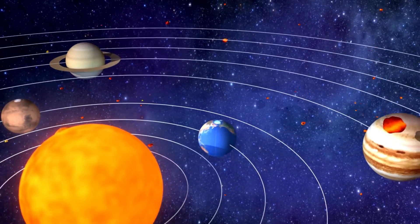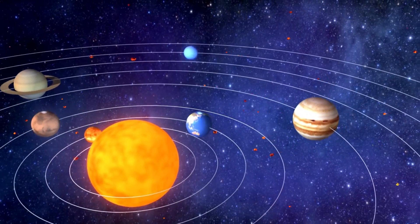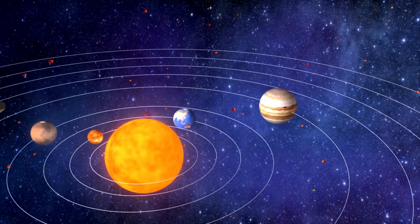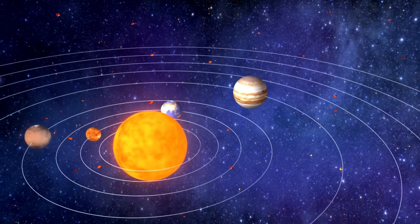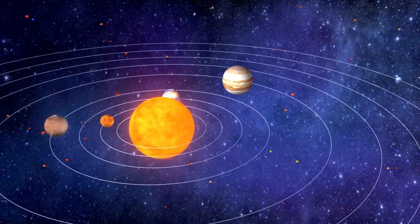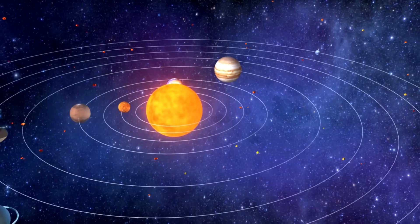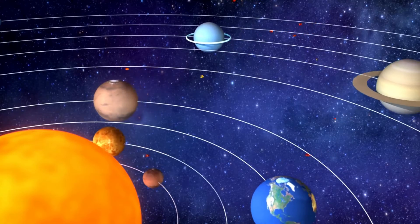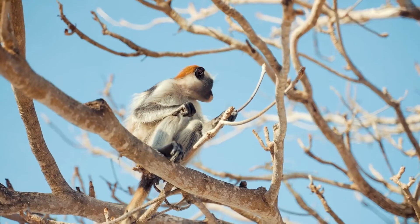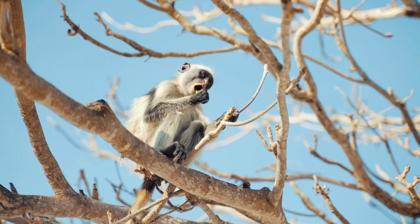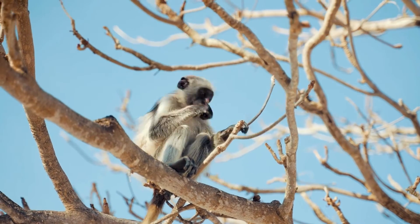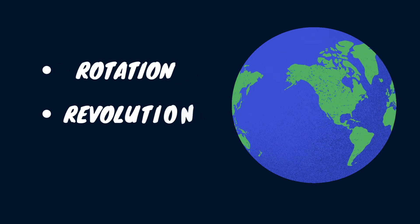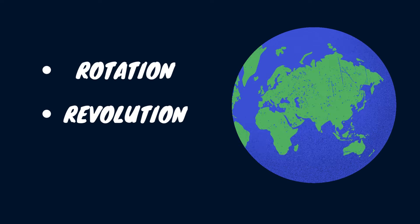Earth is smaller than Jupiter, Saturn, Uranus, and Neptune, but larger than the three other rocky planets — Mercury, Mars, and Venus. It is the only planet on which life is known to exist. The Earth moves at a constant speed.